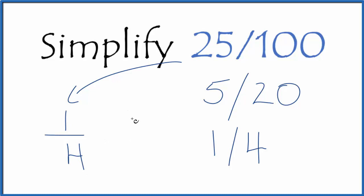But either way, we end up with the simplified fraction for 25 over 100. And that is 1 fourth. This is Dr. B, and thanks for watching.